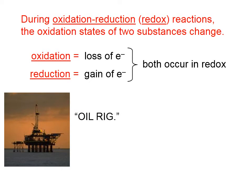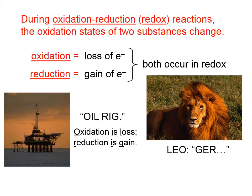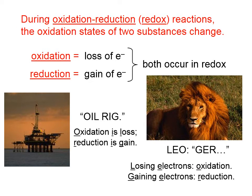Here are a couple of mnemonics to help you remember what oxidation and reduction are. OIL RIG stands for: oxidation is loss of electrons, reduction is gain of electrons. Here's another one: LEO the lion says GRR — losing electrons is oxidation, gaining electrons is reduction. If these mnemonics help, please use them, but it is absolutely essential that you realize oxidation is the loss of electrons and reduction is the gain of electrons. We're going to be talking about those a lot in these lessons.